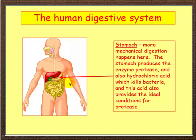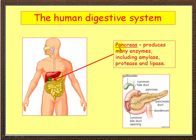Moving down — oh, before I forget, there's a little sphincter here called a pyloric sphincter, which controls passage of food. The pancreas produces many enzymes, including amylase, protease, and lipase.